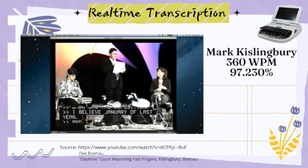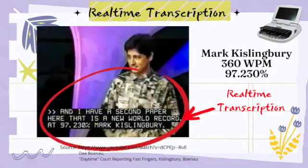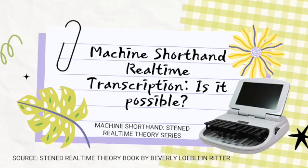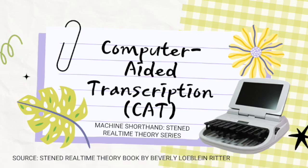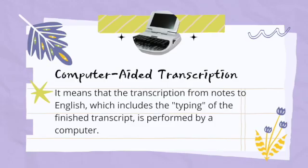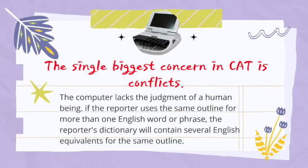What you saw on screen is an example of real-time transcription. So the question — machine shorthand real-time transcription, is it possible? — the answer is a big yes. But how? With the use of Computer-Aided Transcription, or CAT. CAT means the transcription from notes to English — including typing the finished transcript — is performed by the computer. It translates whatever you have written in your machine, either in real time or later on.